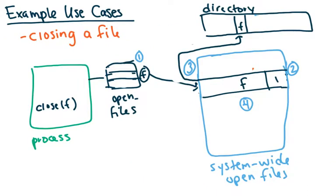Now let's talk about closing a file. When a process calls close, the first thing we do is remove the entry in the per-process open file table — but we need to save that pointer to follow it to the system-wide open file table. In the system-wide table, we decrement the count of processes using it. If the count drops to zero, no processes are using it, so it's safe to close and remove it from the system-wide table. We then copy the contents of the file's control block back into the directory, since it may have changed — it may have gotten larger, been renamed, and so on.